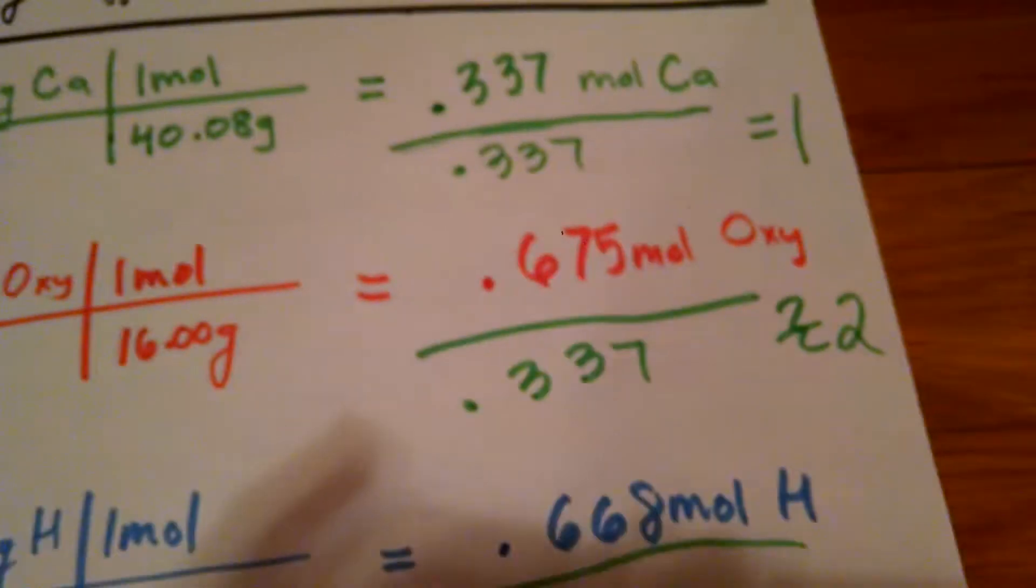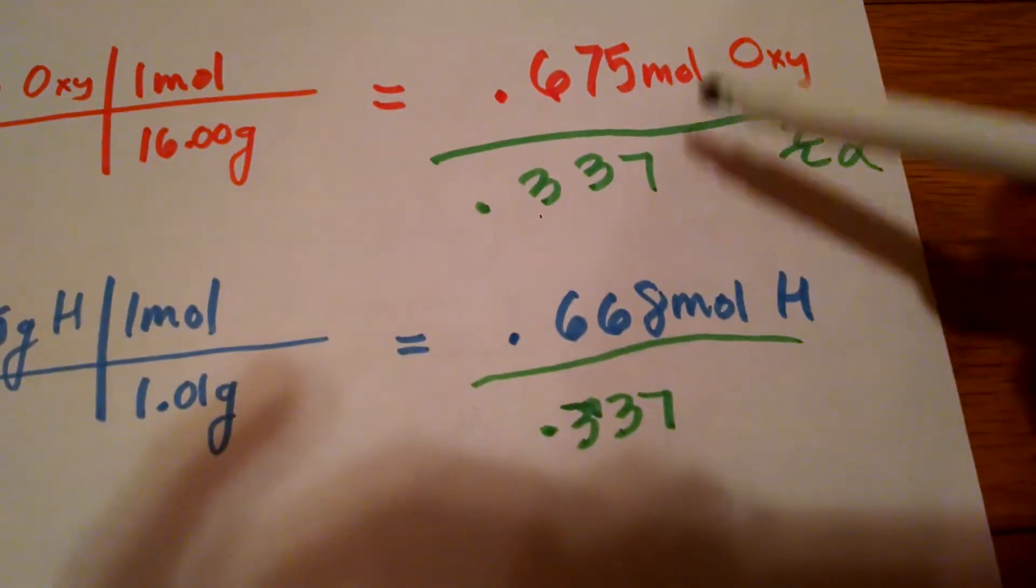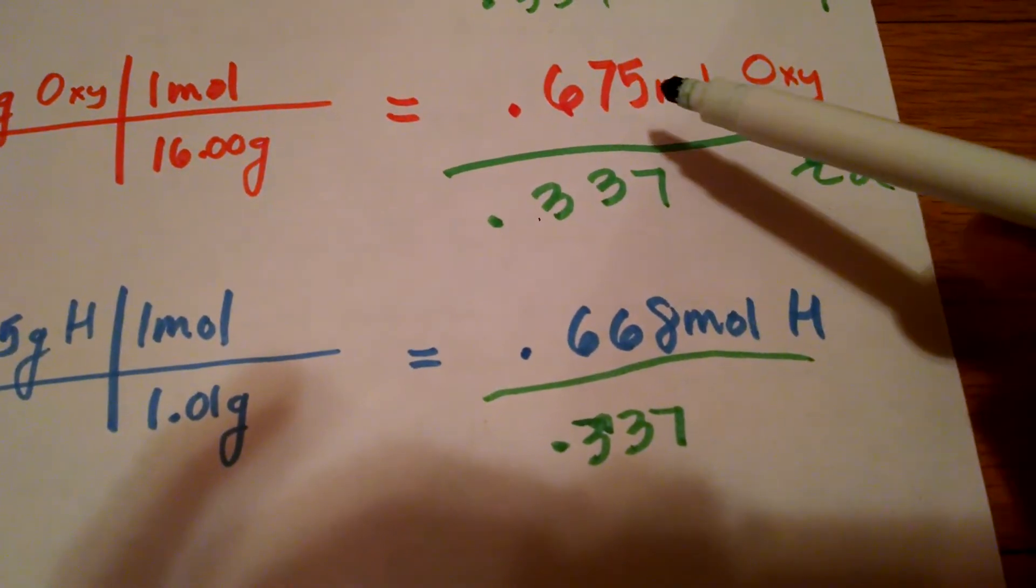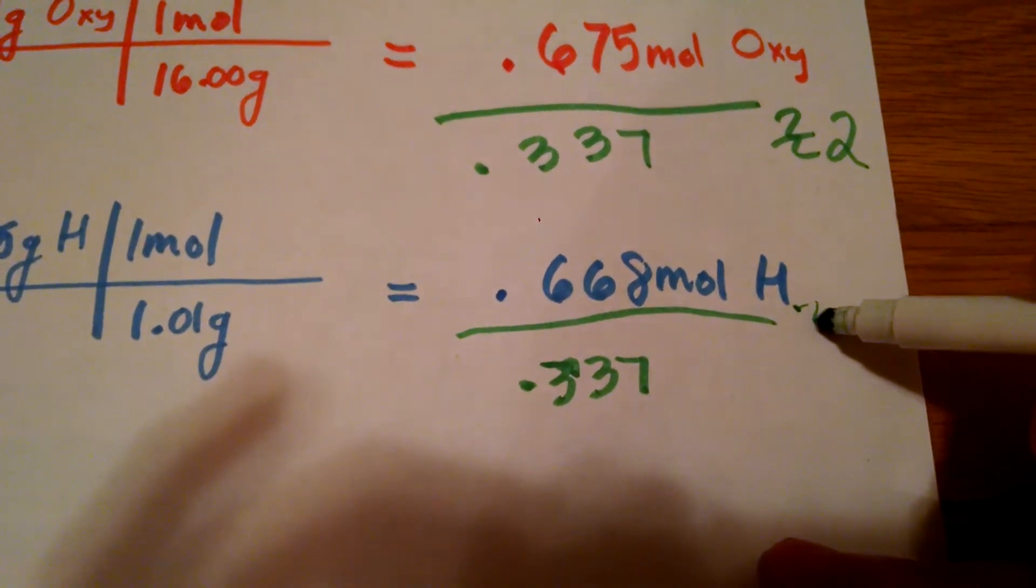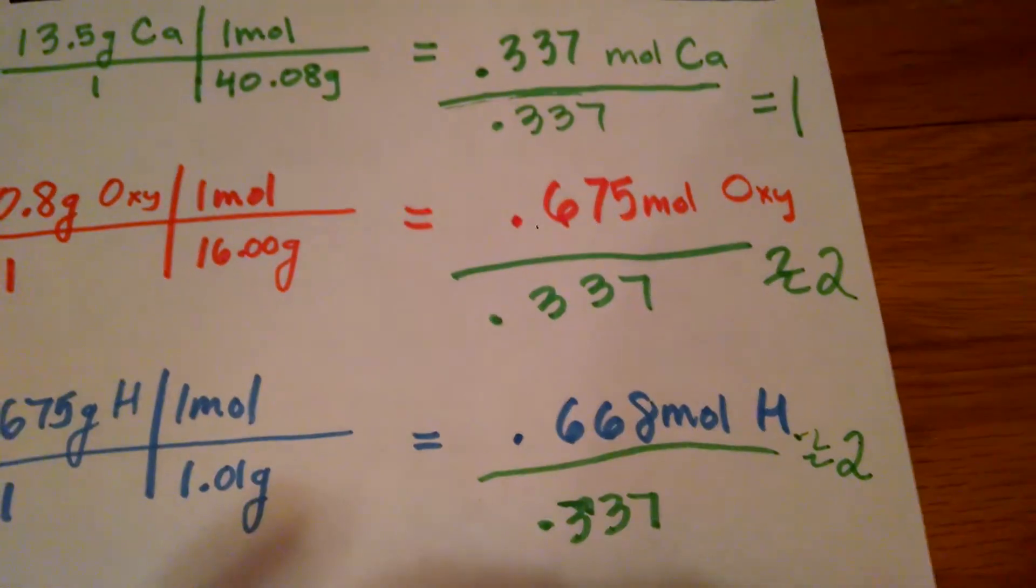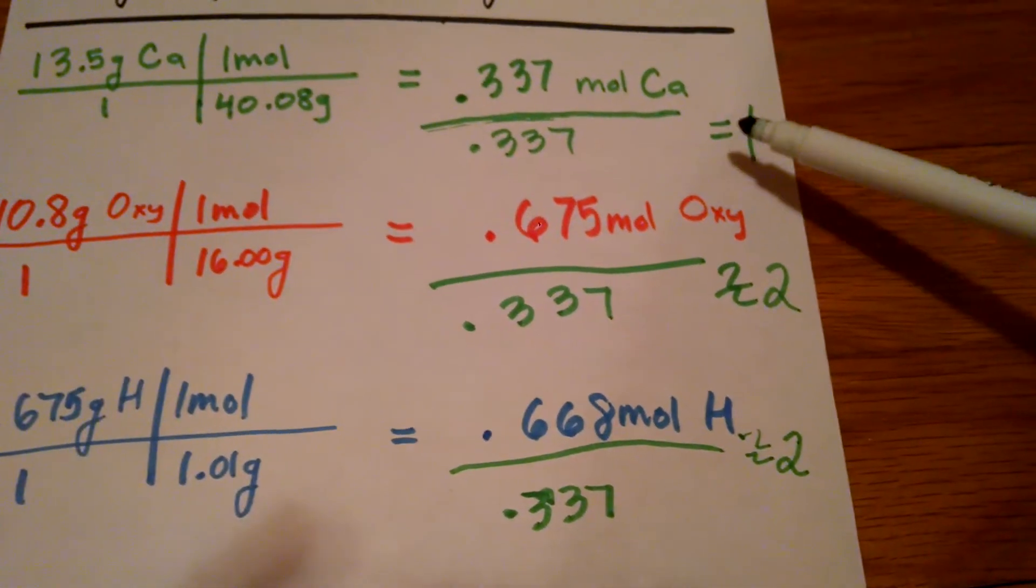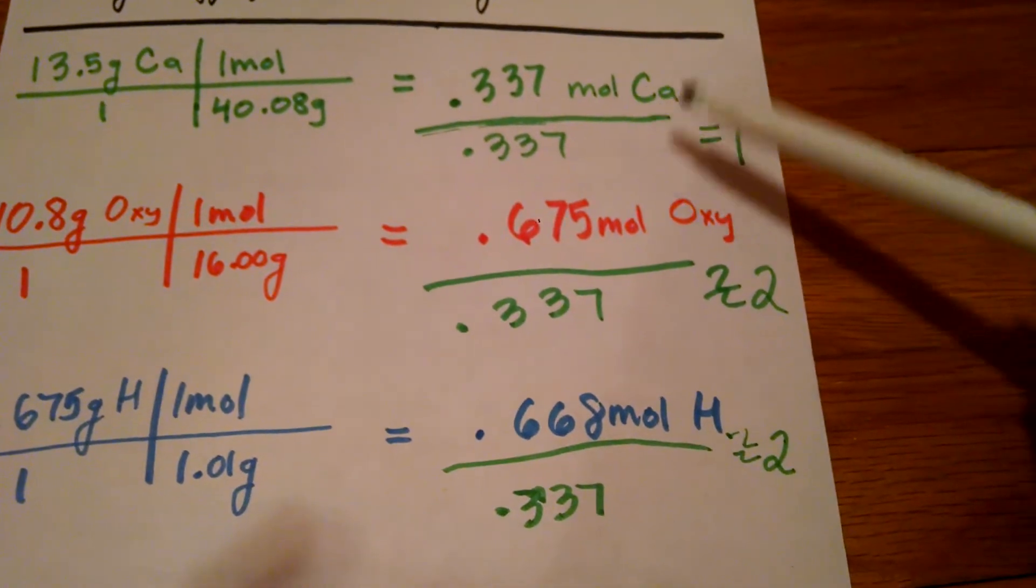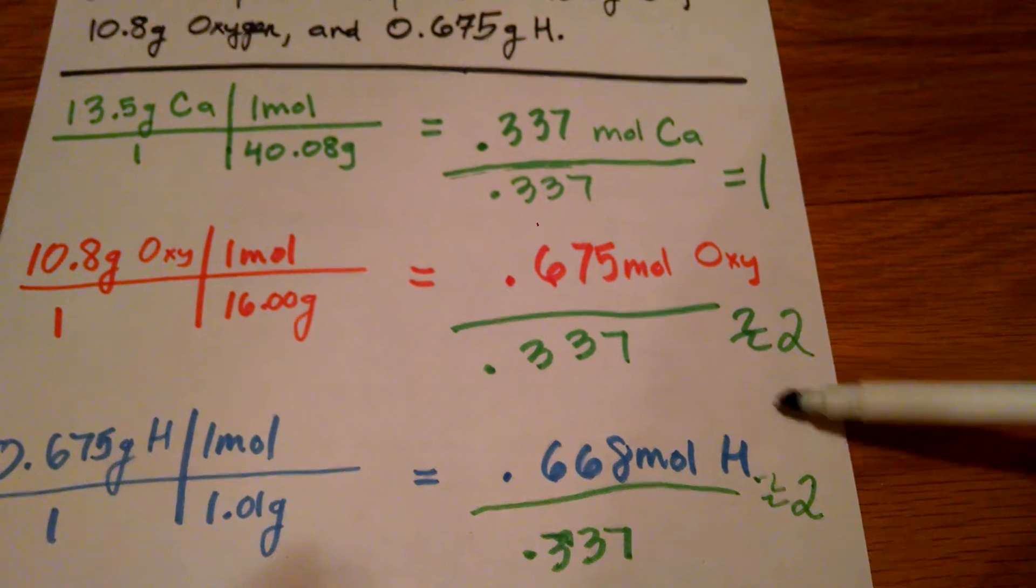Is that close enough to 2? Of course it is. That's close enough to 2. And if we look at this number, 0.668 is really close to 0.675. That's also going to be close enough to 2.